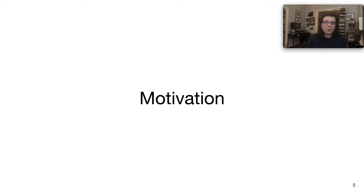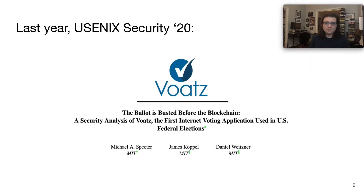Now with that out of the way, why would we want to do this analysis at all? Last year, I presented a paper on another internet voting system called VOTES that was also used in US federal elections. We found that VOTES had vulnerabilities that would allow a number of different kinds of adversaries to alter, stop, or expose a user's vote. And as a result, most of the counties using VOTES actually abandoned the product. This included a number of jurisdictions in Oregon and Colorado, as well as the entire state of West Virginia.